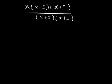The only common factor is x plus 5. Therefore, we divide it. In layman terms, we say cancel it. And so we are now left with x times x minus 3 all over x plus 5.